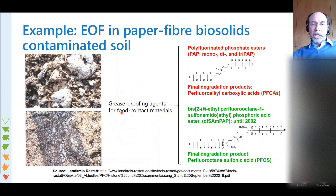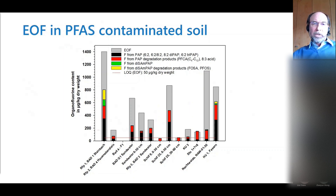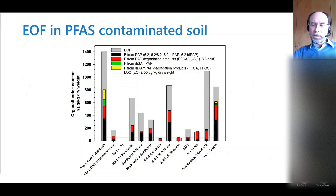For EOF applied to soil, we have worked in recent years on different projects involving agricultural soils contaminated by paper fiber biosolids. These soils are contaminated by chemicals used for grease-proofing of food contact materials like the pubs shown on the right side. When we measure EOF - the large gray bars - and compare with the sum of organofluorine from target analytes (the colored stacked bars), we end up with a gap. In most of these samples there is a gap of unknown precursors.